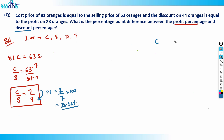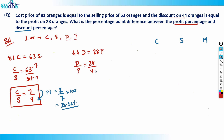For discount percentage I need the cost price, selling price, and marked price. The question says discount on 44 oranges equals profit on 28 oranges, so 44d = 28p. Therefore d/p = 28/44, and cancelling by 4 gives d/p = 7/11. So the ratio of discount to profit is 7:11.